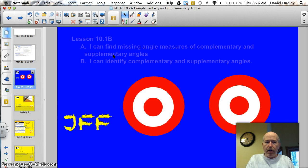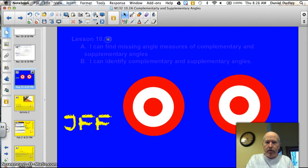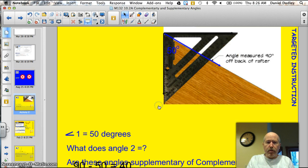Officially tonight our two targets are 10.1A and B. A: I can find the missing angle measures of complementary and supplementary angles. And B: I can identify complementary and supplementary angles. Sounds pretty similar. That's why I grouped them together. Let's do this thing.